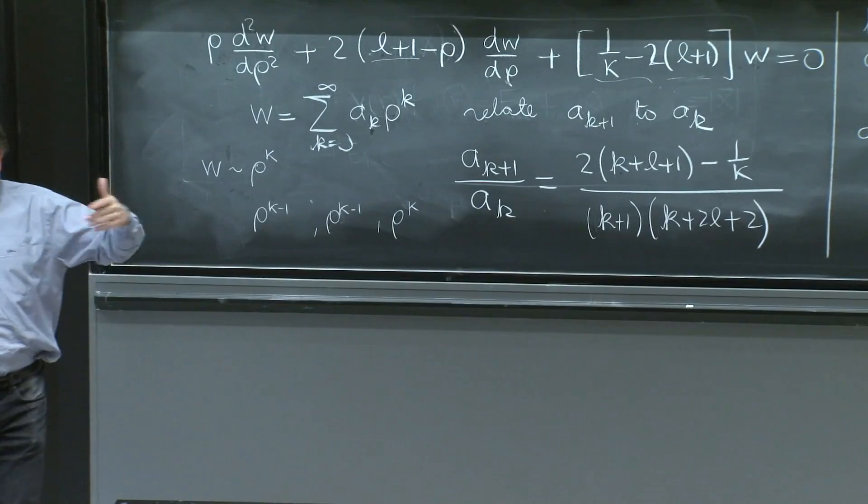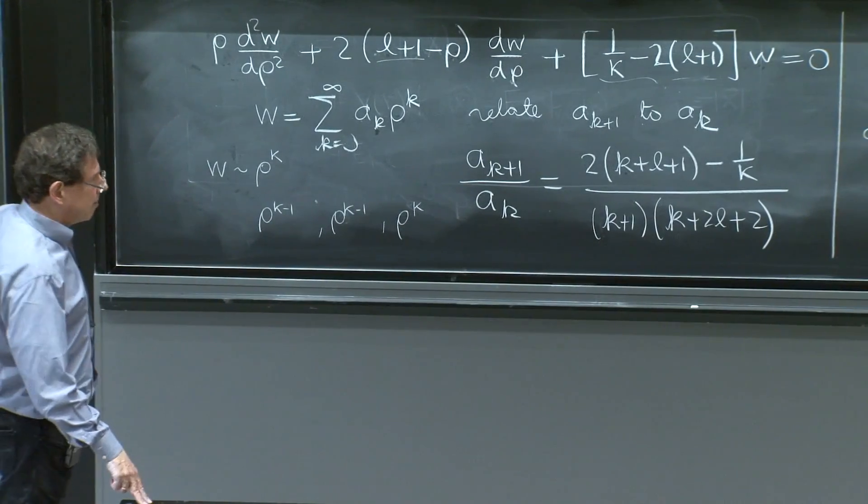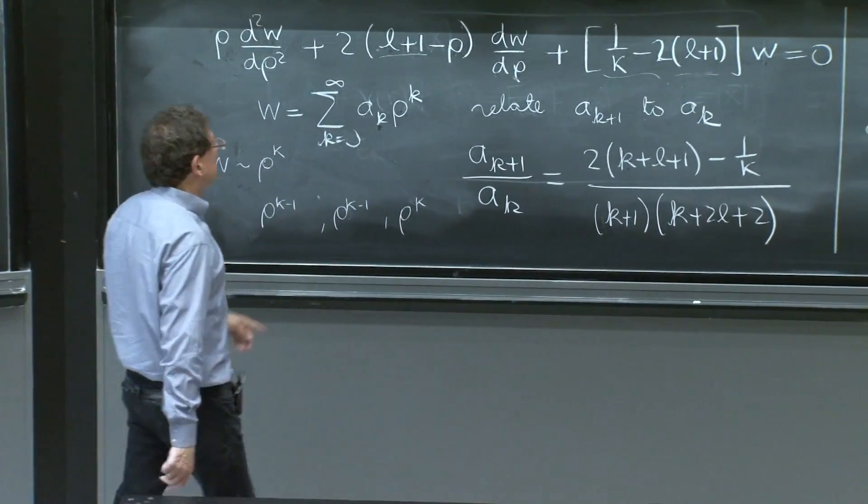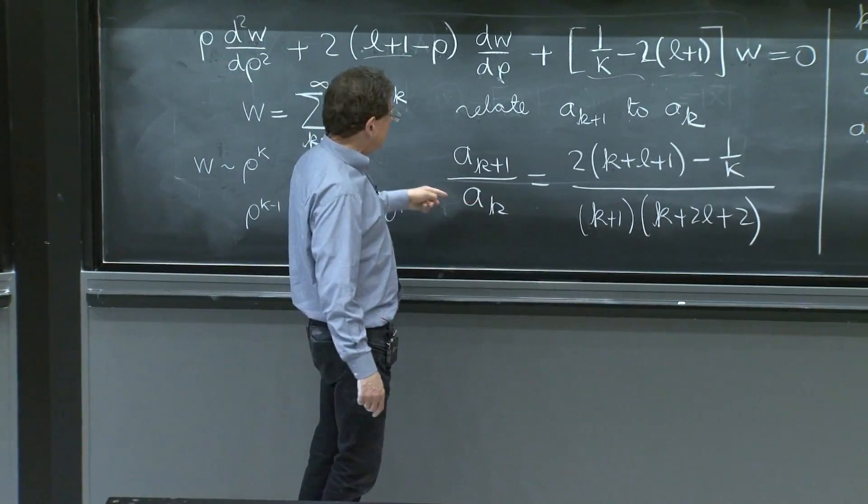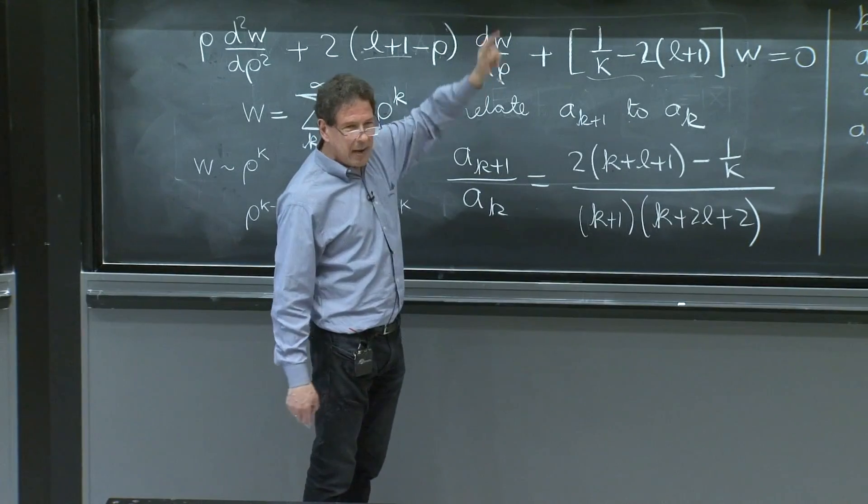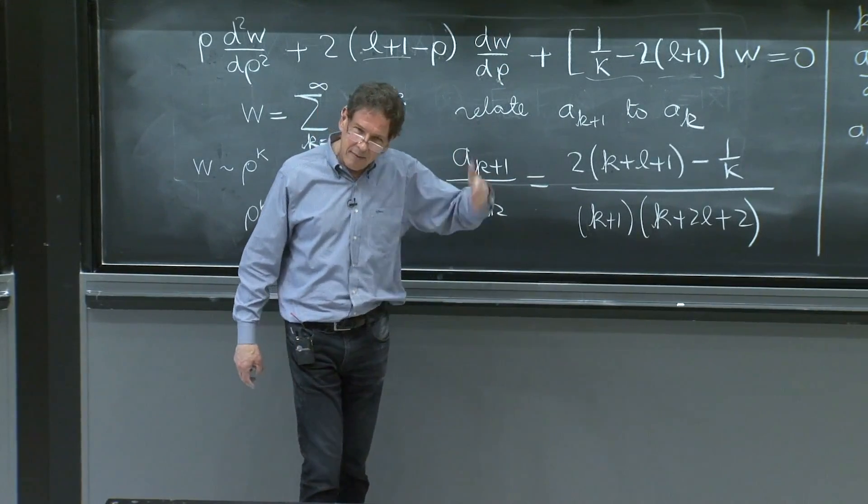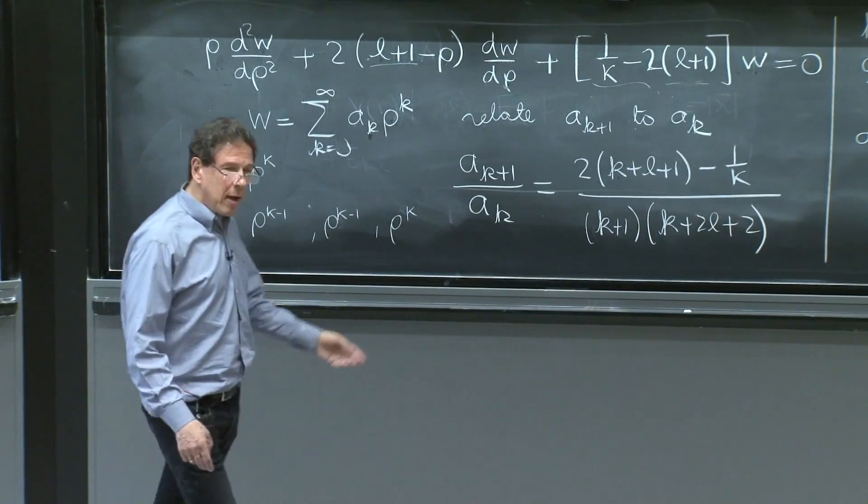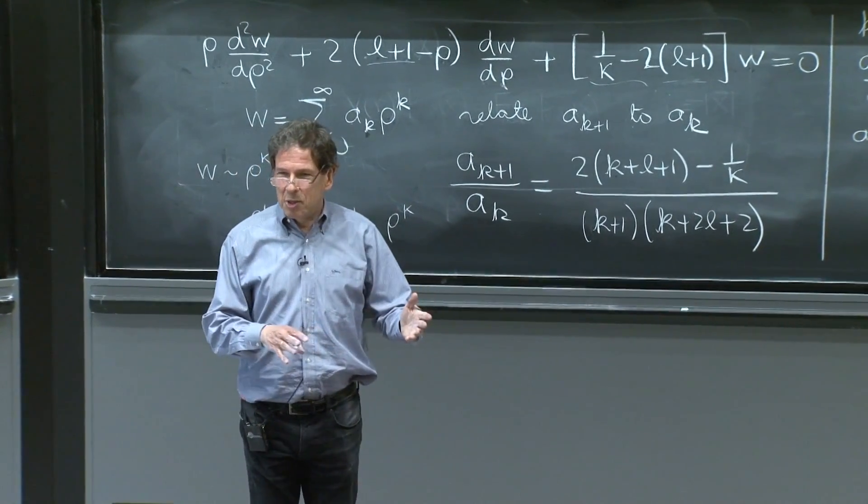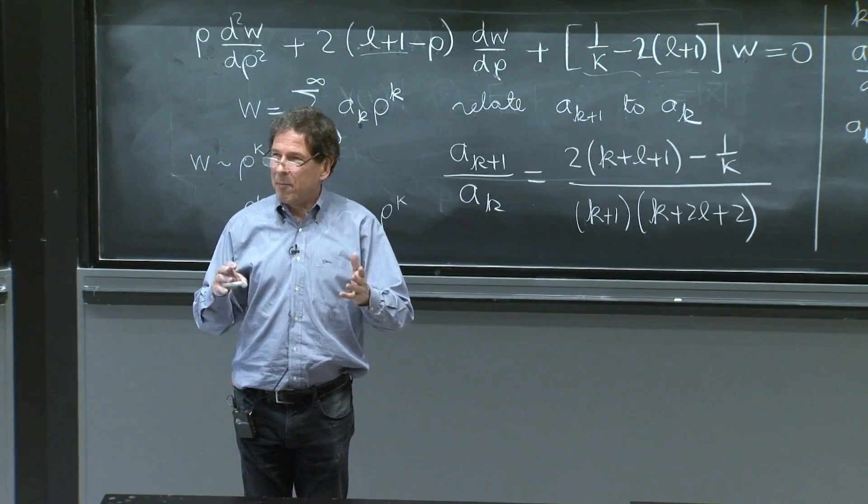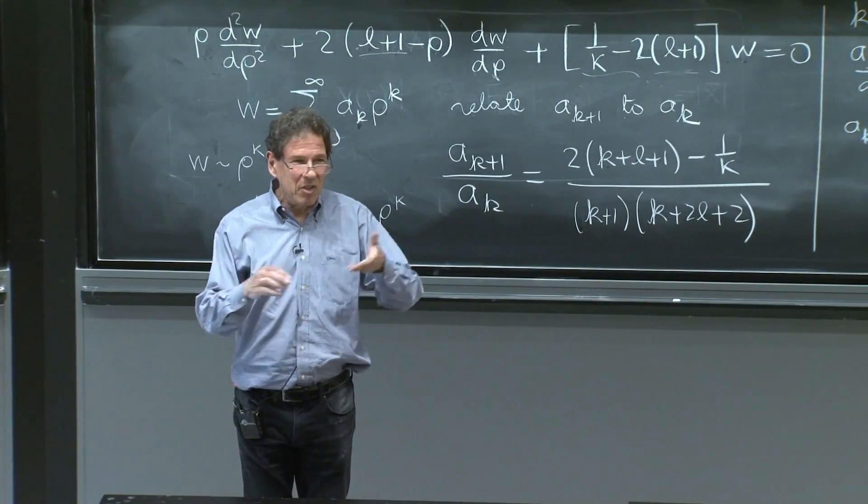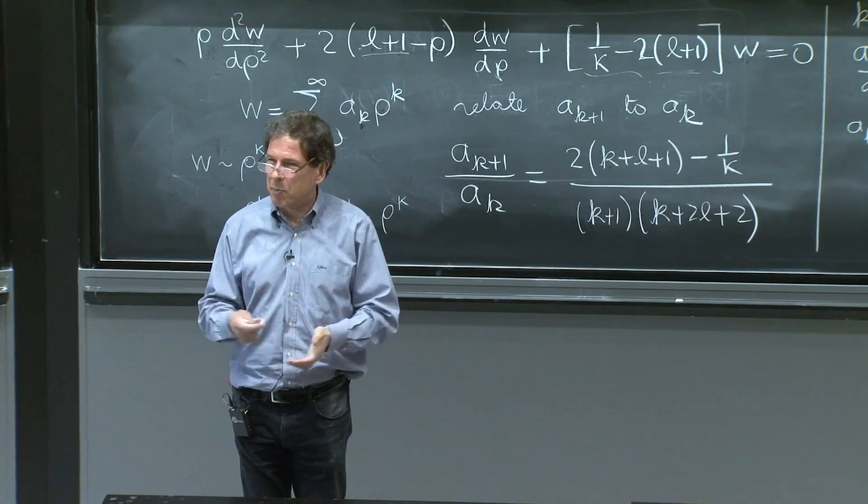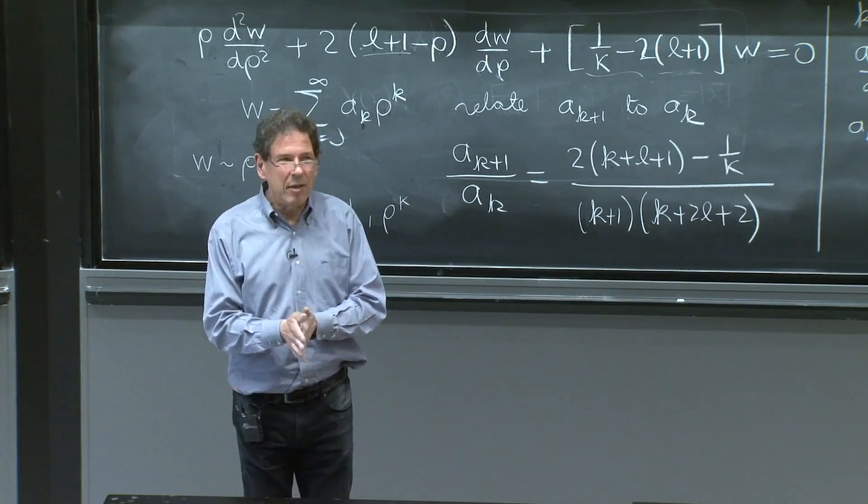I don't have to state that all of the rest are 0, because it's a one-step recursion relation. Once A5 is 0, A6, A7, A8, all of them are 0. That's it. And we don't have even or odd solutions that we had for the harmonic oscillator, because these are functions of r. And r and minus r, you should not quite expect anything. Minus r doesn't exist.